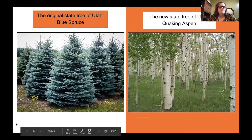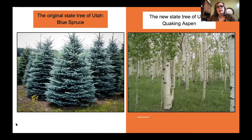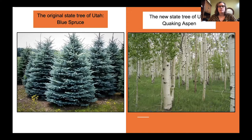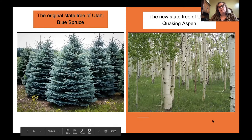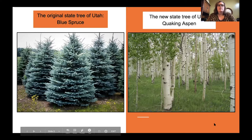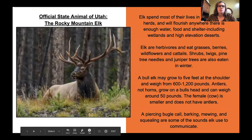Here are some fun facts about Utah's specific trees and animals. The original state tree of Utah was the blue spruce — many of you might have those in your yard or during Christmas time. Our new state tree is the quaking aspen. If you've been on hikes up in the Uintas you see these quakies all over the place. Our official state animal is the Rocky Mountain elk.